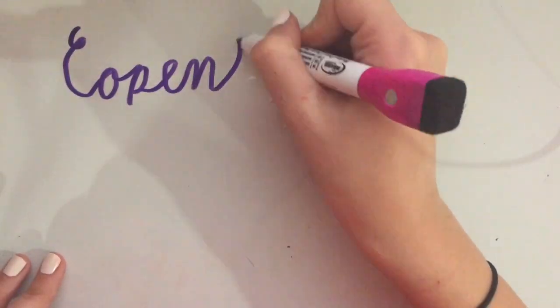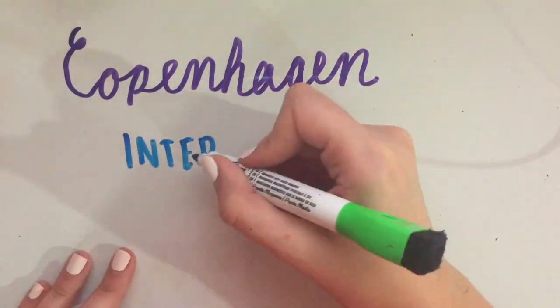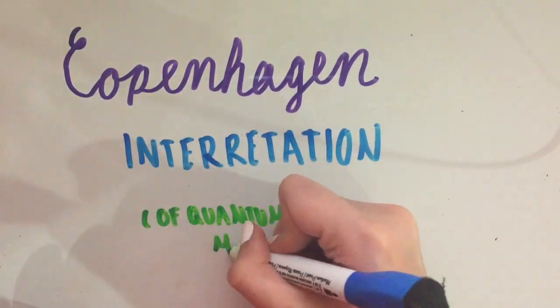In short, the Copenhagen Interpretation basically states that upon observing a probability wave, the superposition collapses and forces the particle to choose just one state.